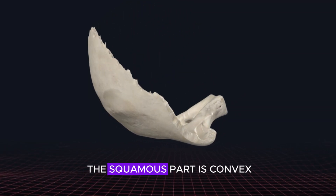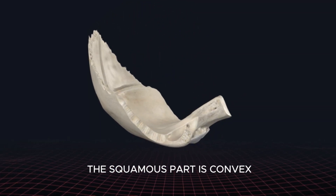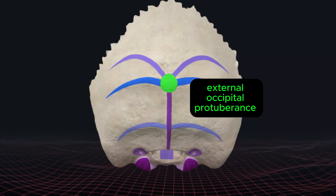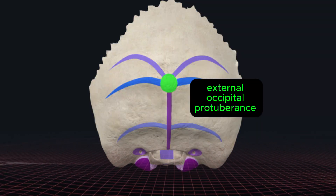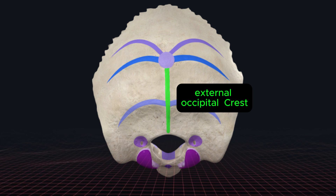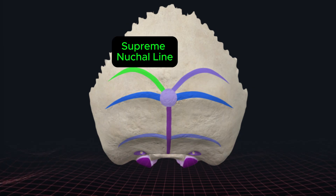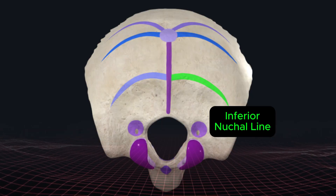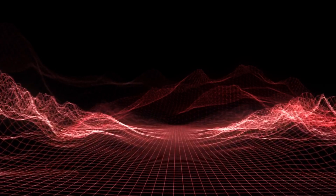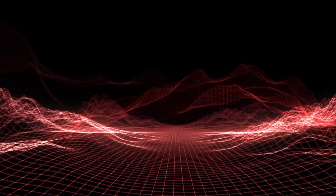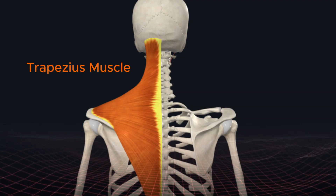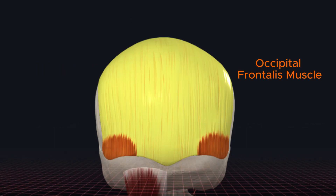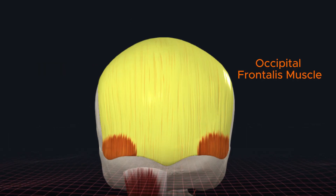The external surface of the squamous part is convex and consists of the external occipital protuberance, external occipital crest, supreme, superior, and inferior nuchal lines. The squamous part provides origin sites for the descending part of the trapezius muscle and the occipital belly of the occipitofrontalis muscle.